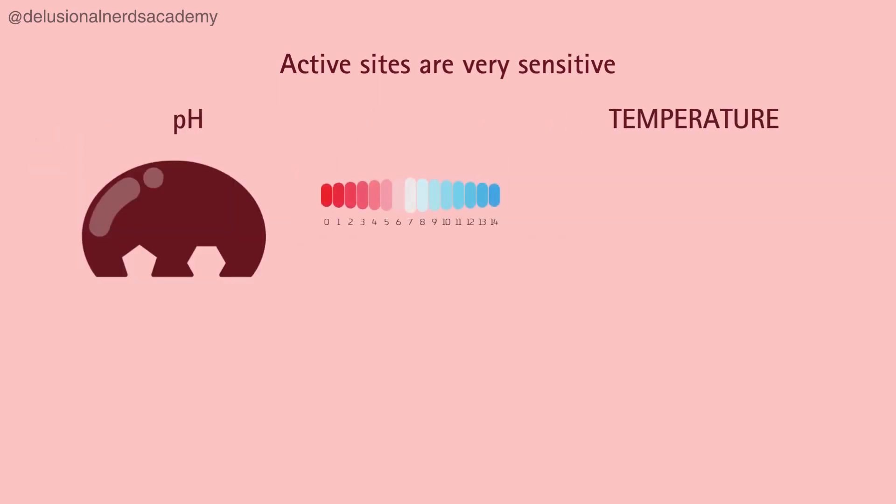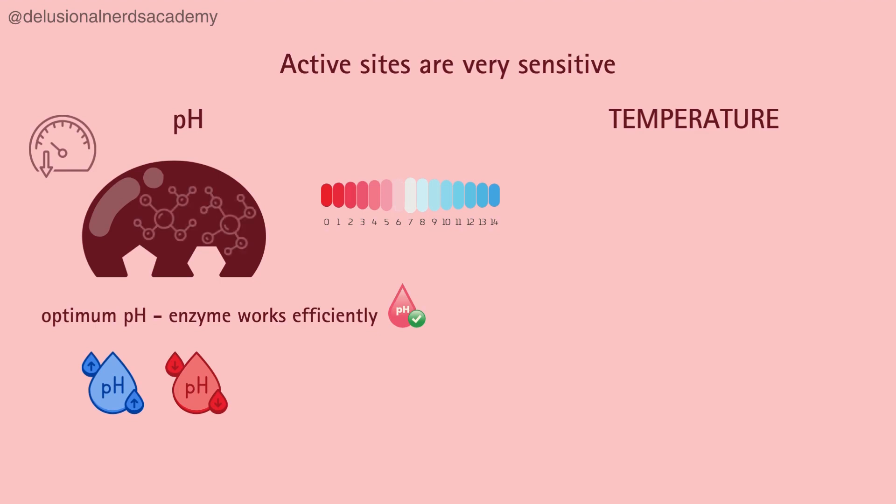Enzymes have a favorite pH called the optimum. When the pH is just right, the enzyme works really fast. But if the pH goes too high or too low, the enzyme slows down. This is because the amino acids present in the enzyme are either acidic or basic. Changes in the pH can impact these amino acids, making it tough for the substrate to attach.